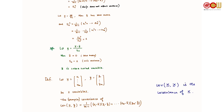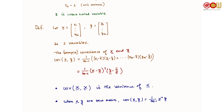So far we considered only one variable. Now let's consider two variables. Suppose we have two variables x and y. The sample covariance of x and y is defined as the dot product of (x minus x-bar) and (y minus y-bar) divided by n minus 1, or equivalently written as a summation. One observation is that cov(x, x) gives exactly the variance of x. Another is that if x and y are zero mean, then the covariance simplifies to x-transpose times y divided by n minus 1.